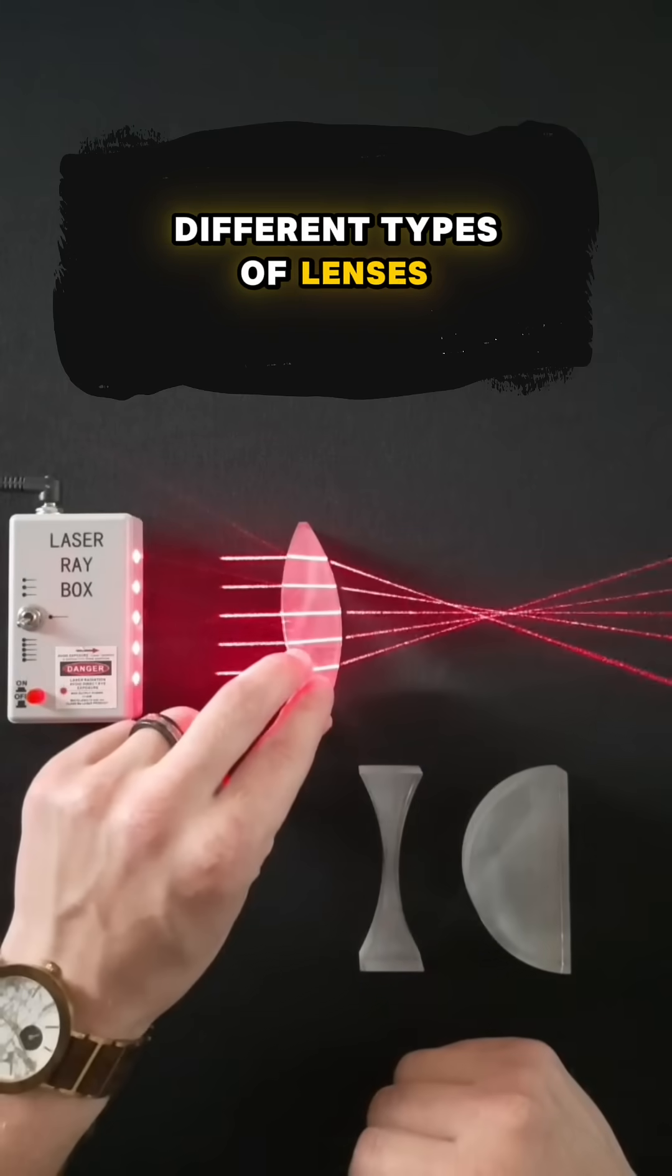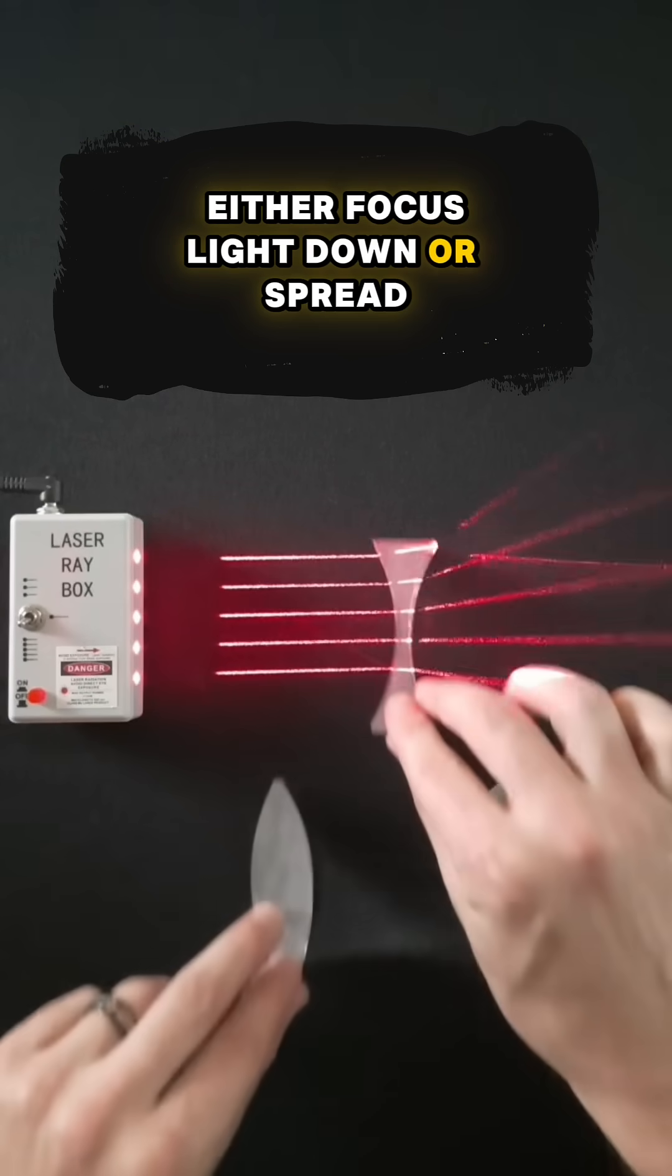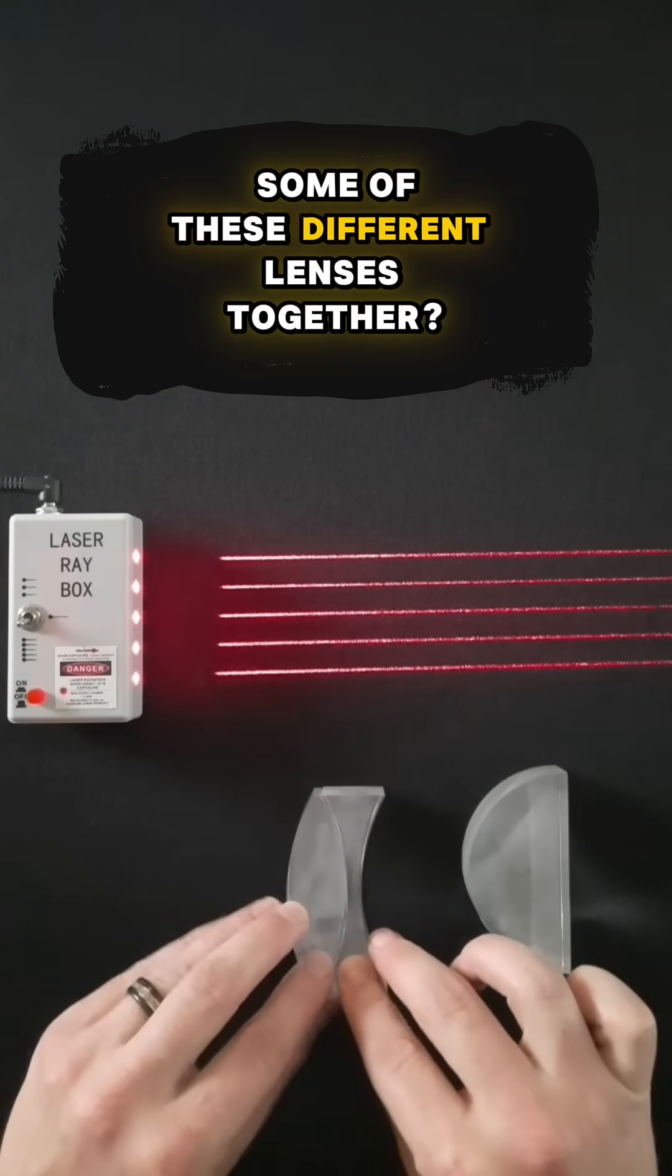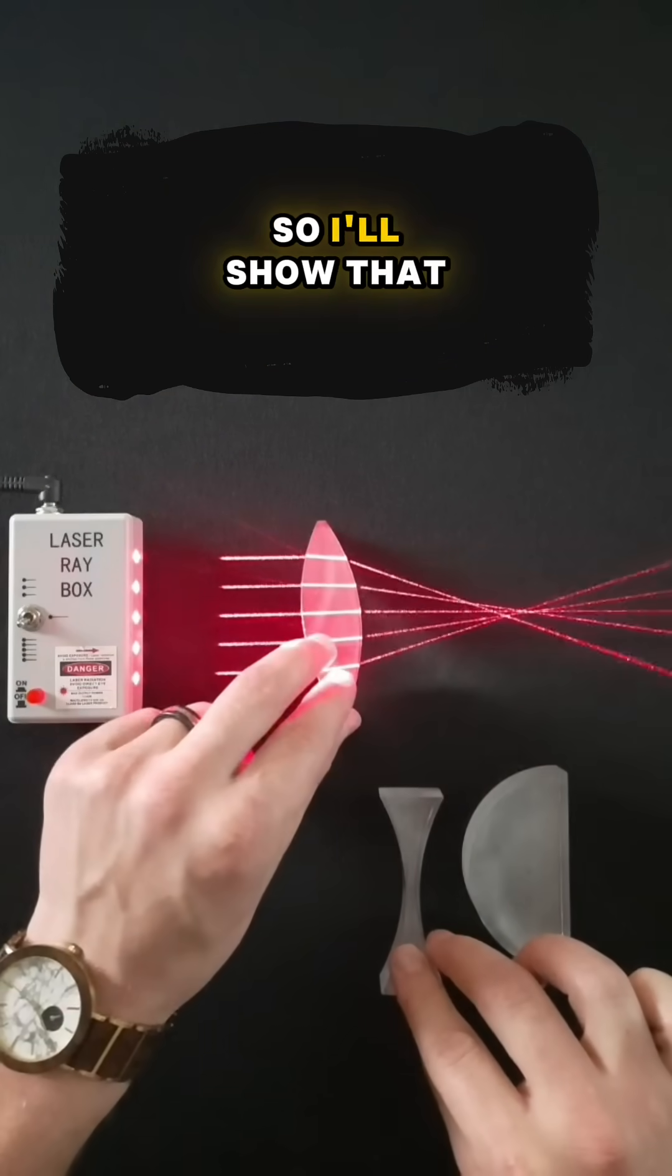Lately I've been showing how different types of lenses either focus light down or spread light out, and a common question I've gotten is what happens if you put some of these different lenses together. So I'll show that.